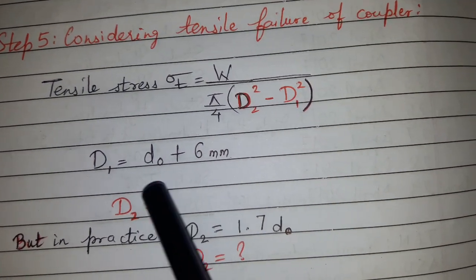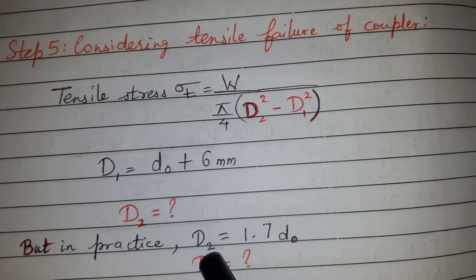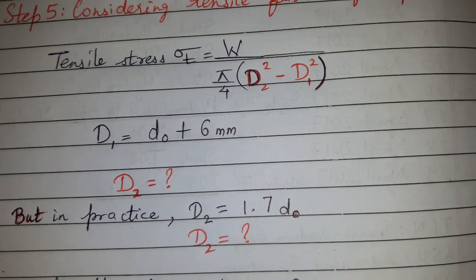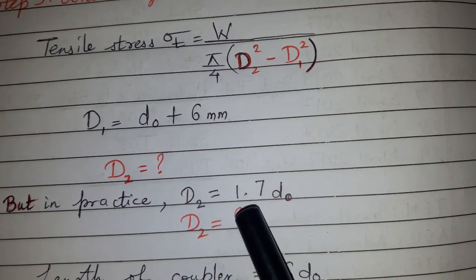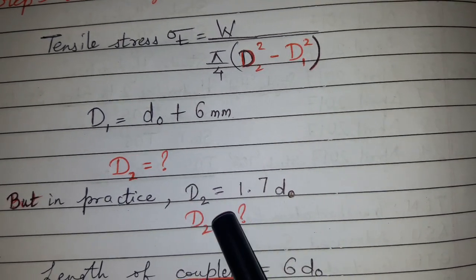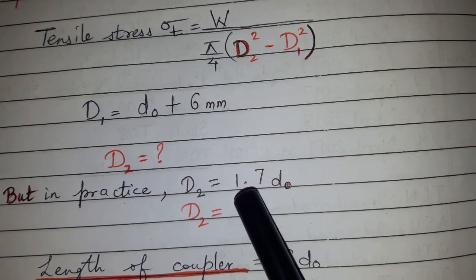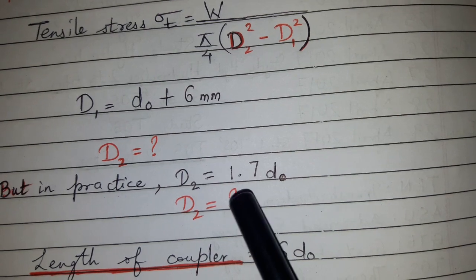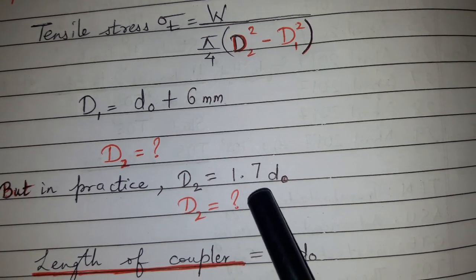But in practice, we will not use this value because this will be a lower value. What we can do is multiply D0 by 1.5—the range is from 1.5 to 1.7. We will take the higher end, 1.7 × D0. Whichever value is higher—normally this value is higher after multiplying by 1.5 to 1.7—we will take 1.7 because it is on the higher side.